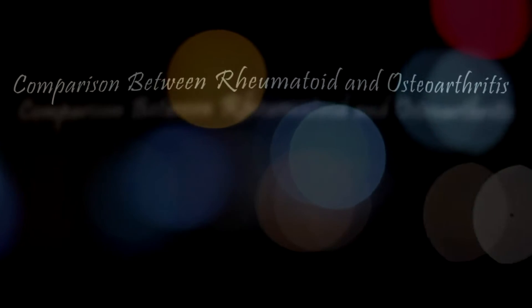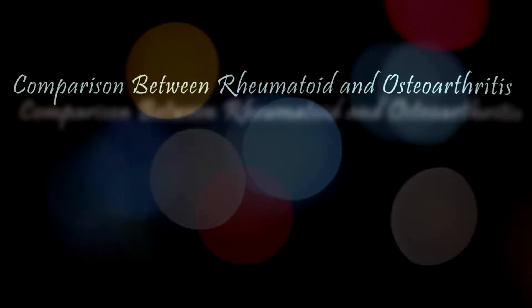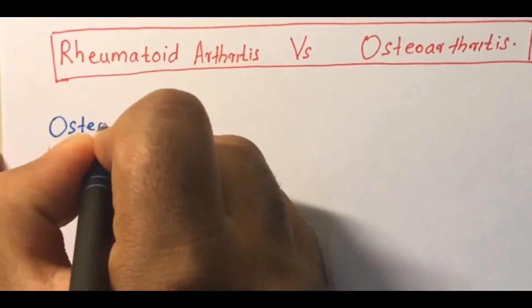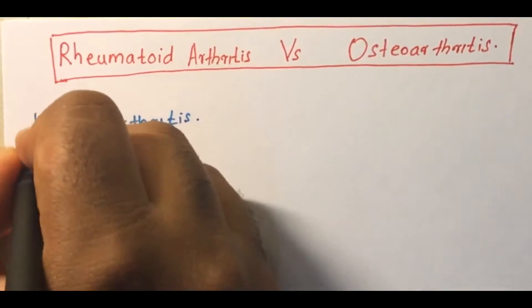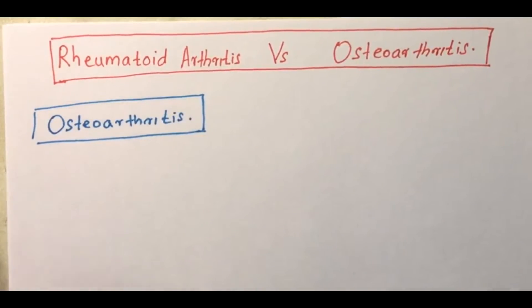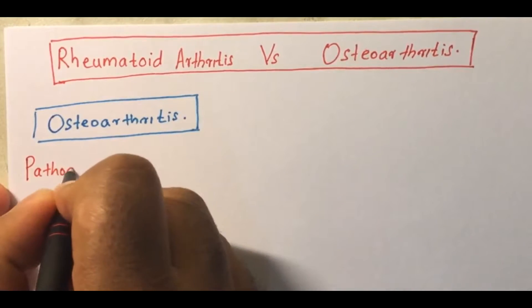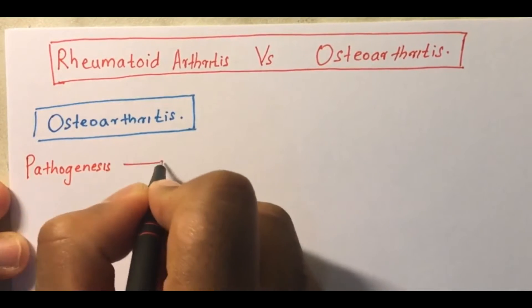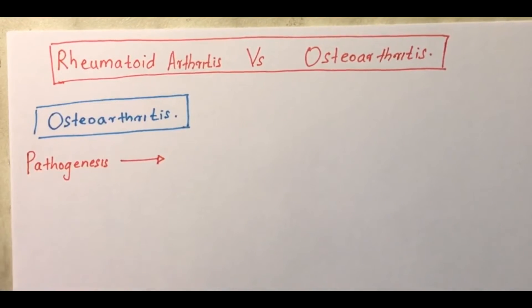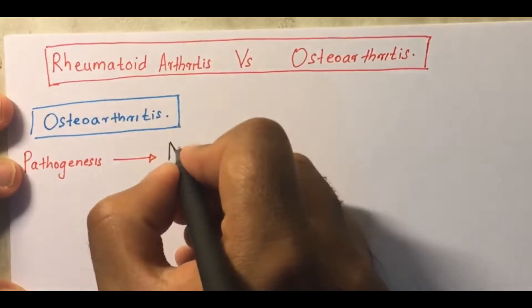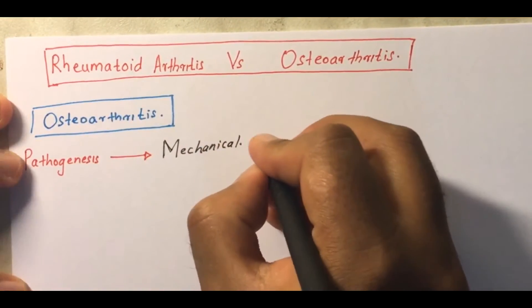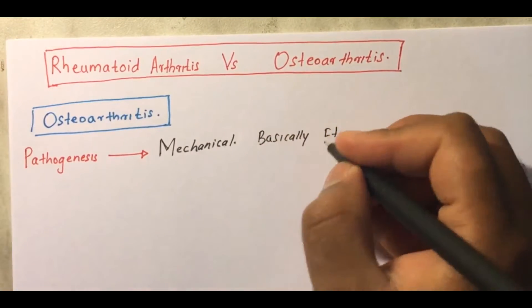First, let us talk about osteoarthritis before we go to rheumatoid arthritis. Osteoarthritis is mainly a mechanical problem — if you look at the pathogenesis, it is primarily a mechanical problem. For instance, it can occur in all weight-bearing joints like the hip joint.